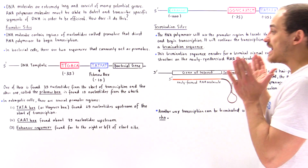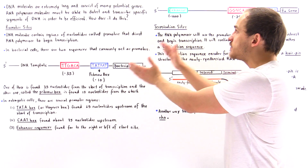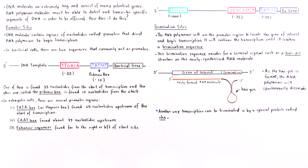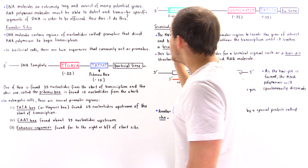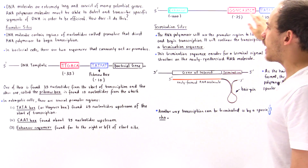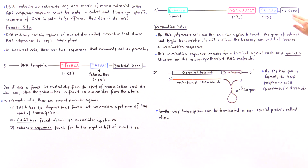These enhancer regions can be found either upstream (to the left) or downstream (to the right) with respect to where the eukaryotic gene is found. Enhancer sequences are found very far away from the eukaryotic gene — usually thousands of nucleotides away; in this particular case, 1000 nucleotides away.